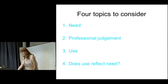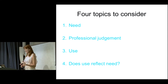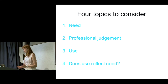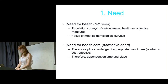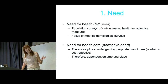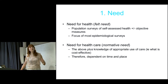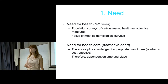Today we have four topics to consider: need, professional judgment, use, and whether use reflects need. These are all crucially interrelated. Let's first talk more about need. Need for health is subjective, and to understand it we use population self-assessment surveys and some objective measures — for example, sending clinicians to observe people's mobility, or asking patients to report how much they can walk. This is how we get evidence from epidemiological surveys.